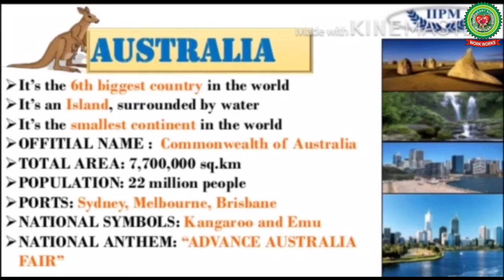The official name of Australia is Commonwealth of Australia. The total area it covers is about 77 lakh square kilometres. The population is near about 22 million people. The main ports of Australia are Sydney, Melbourne, and Brisbane.